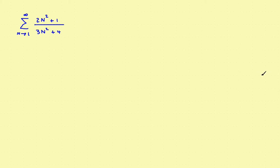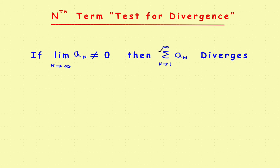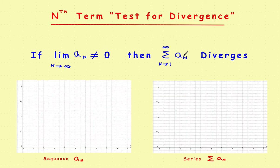Now let's go back to the rule and see what it actually says. If you have a series and you want to know does this series diverge, what the rule says is that the series diverges if the limit of the terms of the sequence that make up that series approach anything but zero. It sounds a little confusing at first, but let's take a graphical look to give you a better feel for what it actually says. You're given this series, and to find out whether it diverges, you work with the sequence that makes it up and find the limit of that sequence.